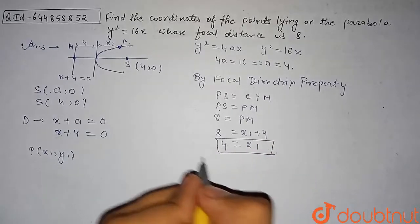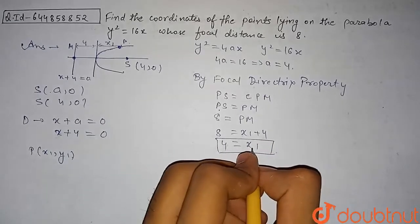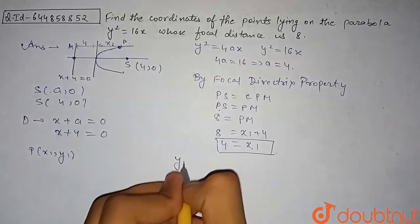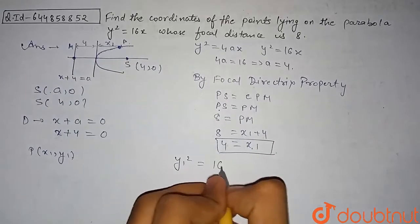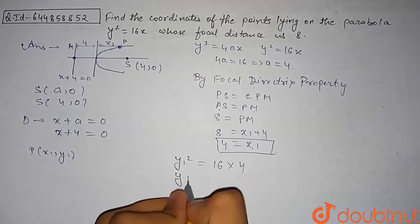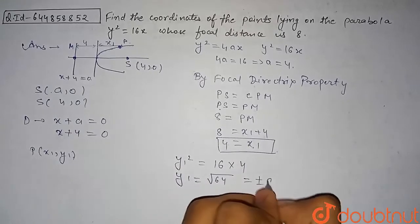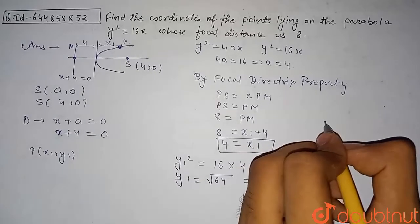Now we will get the y-coordinate. Substituting x₁ = 4 into the parabola equation, we get y₁² = 16 × 4 = 64, so y₁ = ±8.